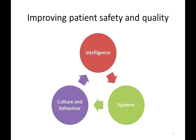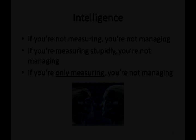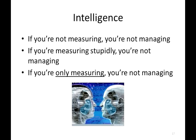When we think about intelligence in healthcare, we often think about measurement, and it's clear that we need to measure how we're doing. We need measures to signal priority, show what's important, create mission so people know what to focus on, assess improvement, know when things are deteriorating, provide feedback to staff, identify areas for intervention, and improve transparency and accountability to patients. If you're not measuring, you're not managing — we cannot run health systems unless we measure. But if you're measuring stupidly, you're not managing either, and I'm going to suggest that we do an awful lot of stupid measurement in healthcare. I'm also going to suggest that if you're only measuring, you're not managing — it's not possible to get high quality intelligence from measurement alone.